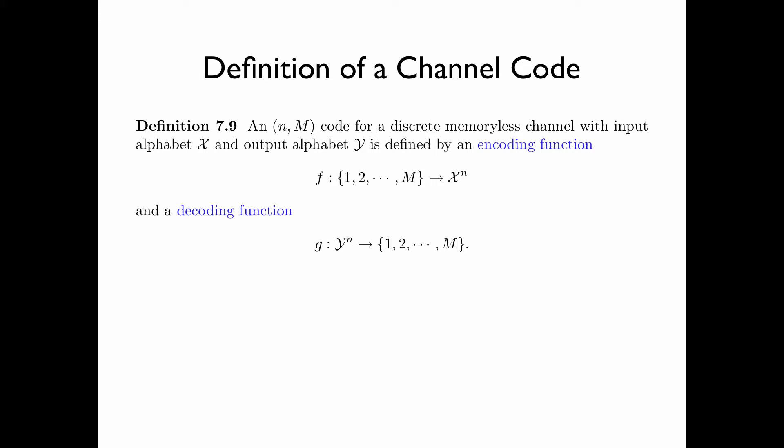Here is the definition of a channel code. An NM code for a discrete memoryless channel with input alphabet x and output alphabet y is defined by an encoding function f from the index set {1, 2, ..., m} to alphabet x to the power n, and a decoding function g from the alphabet y to the power n to the index set {1, 2, ..., m}.